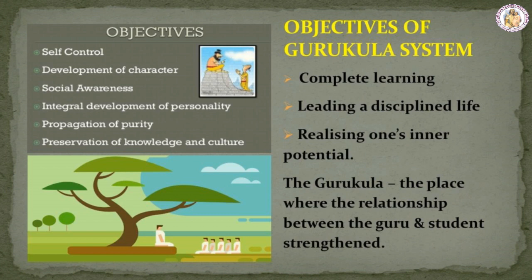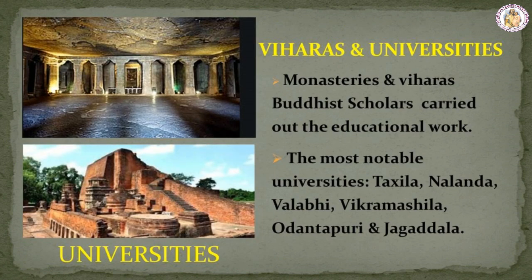Objectives of the Gurukula System. During that period, the gurus and their shishyas lived together, helping each other in day-to-day life. The main objective was to have complete learning, leading a disciplined life and realizing one's inner potential. Students lived away from their homes for years together till they achieved their goals. The Gurukula was also the place where the relationship between the guru and student strengthened with time.